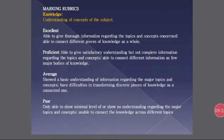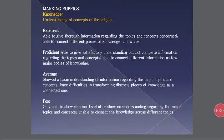For marking the rubrics, consider knowledge — for example, how much the student knows about the subject matter. You must highlight excellent, proficient, average, and poor students in your research. An excellent student is able to give thorough information regarding the topic and concept concerned, and able to connect different pieces of knowledge as a whole. A proficient student is able to give satisfactory but not complete information regarding the topic and concept.